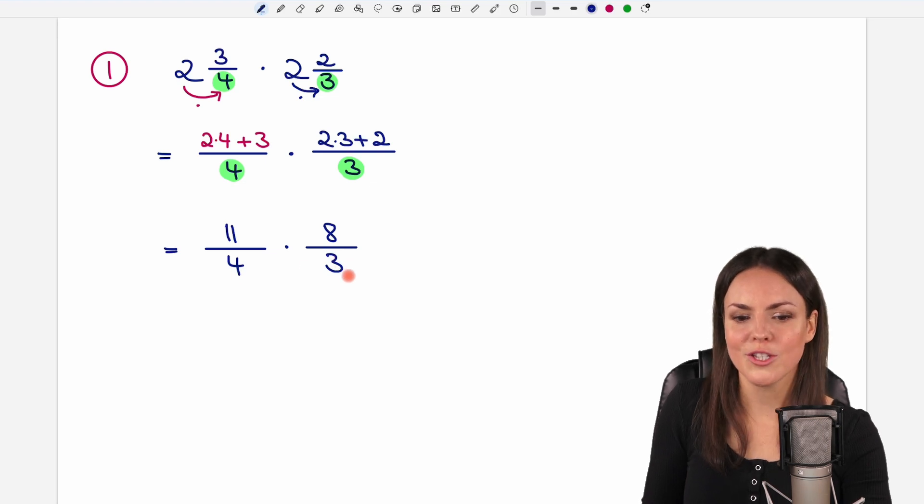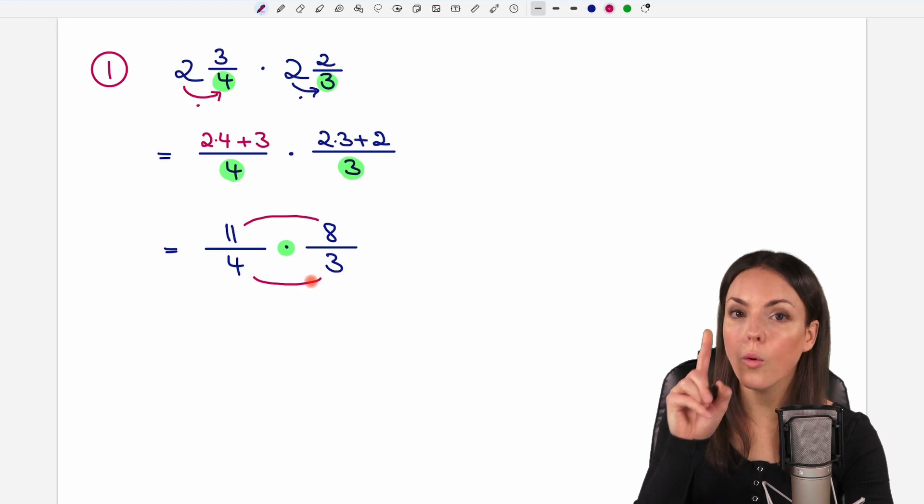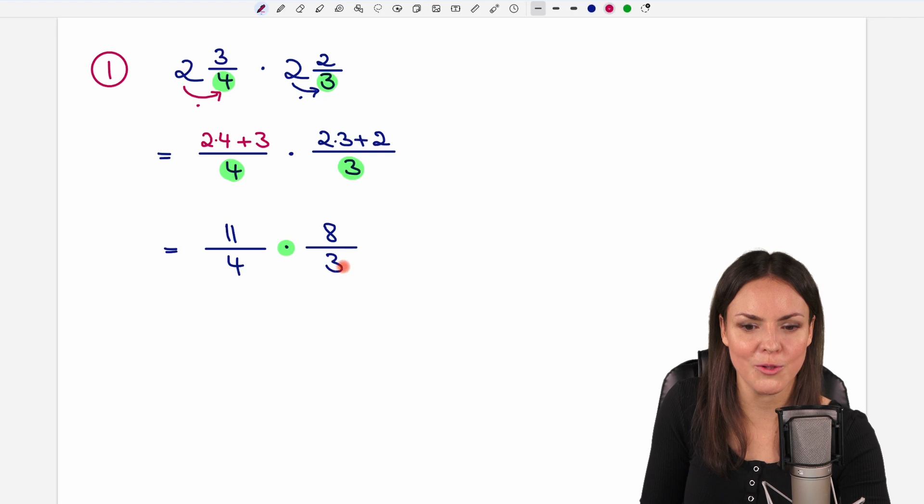Now, we just have two normal fractions that we can multiply. So, we could start multiplying, so 11 times 8 and 4 times 3, or to keep the numbers small, we first try to cancel out common factors.